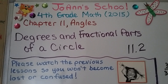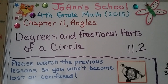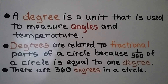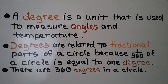Lesson 11.2: Degrees and Fractional Parts of a Circle. A degree is a unit used to measure angles and temperature. Degrees are related to fractional parts of a circle because 1/360th of a circle is equal to 1 degree. There are 360 degrees in a circle.